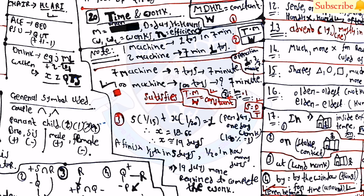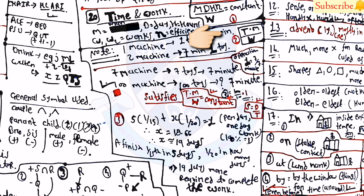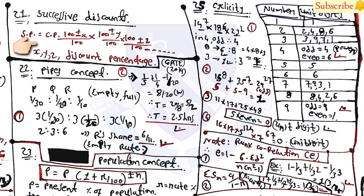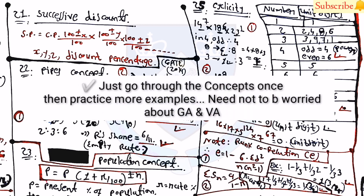An important note: if one machine makes one toy in 7 minutes, two machines also take 7 minutes but produce two toys. So T × M / W = constant is also useful to remember. Topic 21 covers successive discounts, where selling price = cost price × (100 ± x)/100 × (100 ± y)/100 × (100 ± z)/100, and x, y, z are discount percentages. Go through these concepts once, then practice more and more questions for General Aptitude and Verbal Ability.